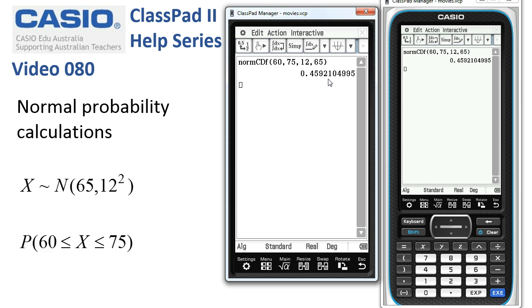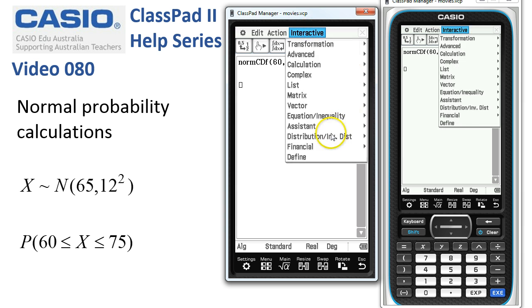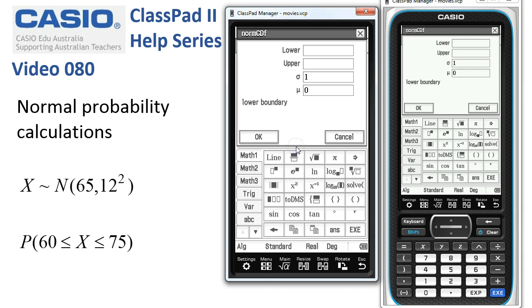If it's a one-sided probability rather than an interval like that one. So the next one we're going to look at is the probability X is greater than or equal to 60. So here we go again: distribution, continuous, norm CDF. The lower, because it's going to be greater than or equal to 60, is 60 this time and I tap execute.